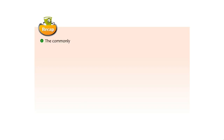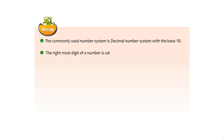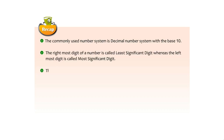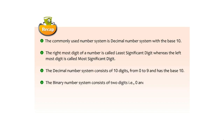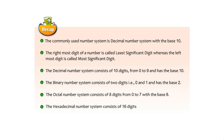Let us quickly glance through the key points discussed in this chapter. The commonly used number system is the decimal number system with base 10. The rightmost digit of a number is called the least significant digit, whereas the leftmost digit is called the most significant digit. The decimal number system has 10 digits (0–9) with base 10. The binary number system has 2 digits (0 and 1) with base 2. The octal number system has 8 digits (0–7) with base 8. The hexadecimal number system has 16 digits — 0 to 9 and letters A to F — with base 16.